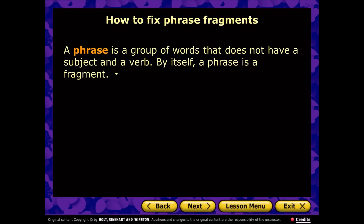Let's look at phrase fragments. A phrase is a group of words that does not have a subject and a verb. A clause, on the other hand — we've talked before about independent and dependent clauses — those groups of words do have subjects and verbs. A phrase, however, is missing either the subject or the verb, and so of course a phrase is going to be a fragment.